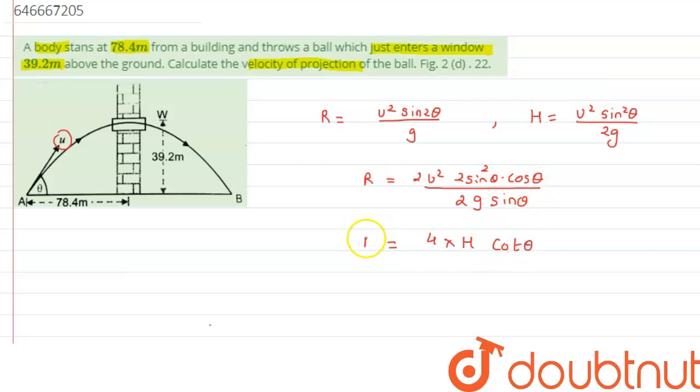Therefore we can say 4H by R will be nothing but it can be written as tan theta. Alright.